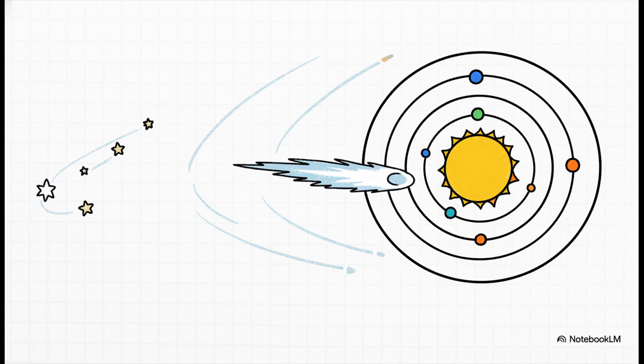So first up, 3i. Now this little code is a really big deal. The i tells us it's interstellar. That means this thing came from outside our solar system. And the 3? It's only the third interstellar object we've ever confirmed. Just let that sink in for a second. This isn't just some local rock floating around. It's basically a messenger, a tiny piece of another star system just passing through. A visitor from that huge, empty space between the stars.